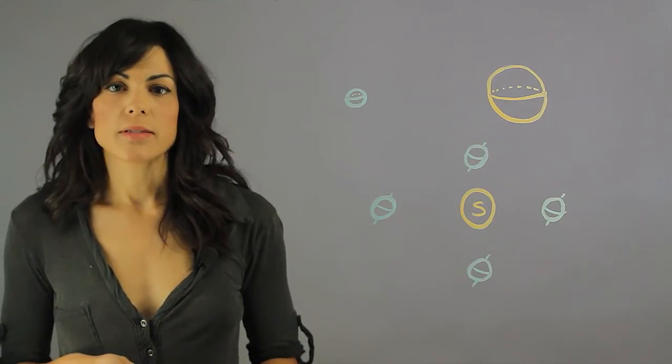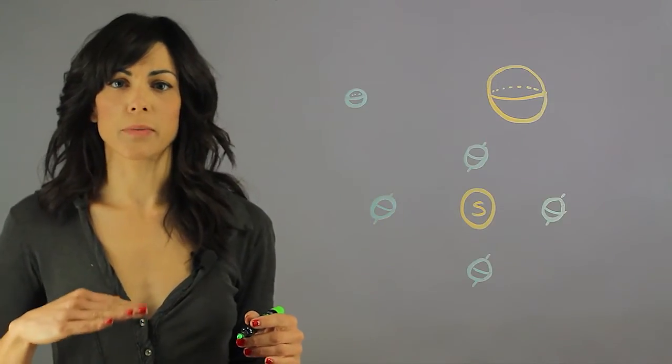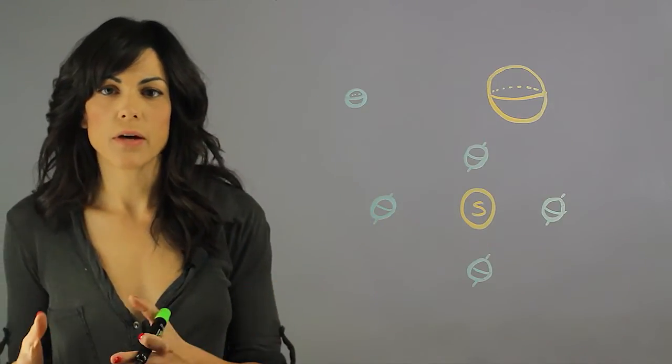So an equinox is when the equatorial plane of the Sun is in the same plane as the equatorial plane of the planet. So equinox means equal planes.